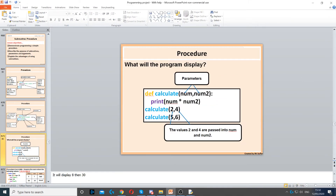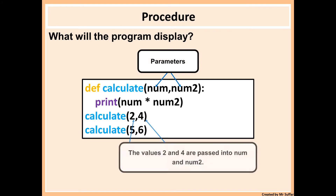You can also use multiple parameters. Here we have a procedure called 'calculate' with two parameters, 'num' and 'num2'. The procedure does num times num2. Since they have no values by themselves, we use arguments: 2 is passed into 'num' and 4 into 'num2', so it displays 8. Then it runs again with 5 and 6, displaying 30.